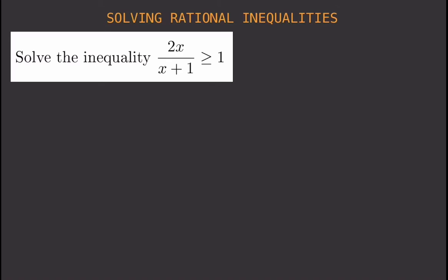In solving rational inequalities, you first have to make sure that your right-hand side of the inequality is 0. If it is not 0, all you need to do is subtract that value from both sides. So if you have 1 on the right side, you subtract 1 from both sides. You don't subtract 1 in just the numerator or denominator — you subtract 1 from the entire term.